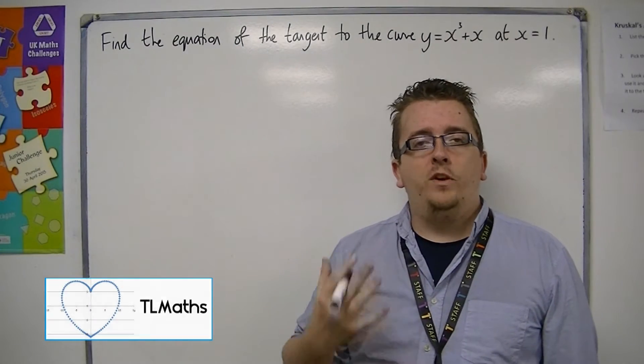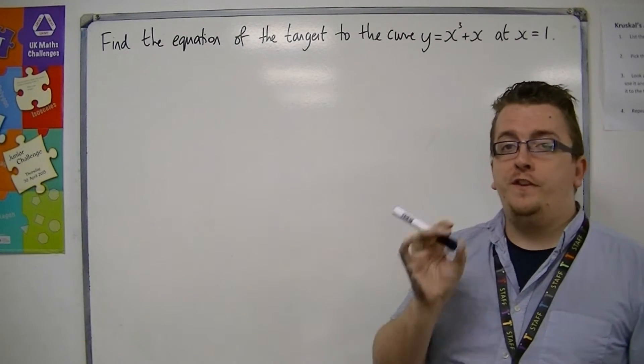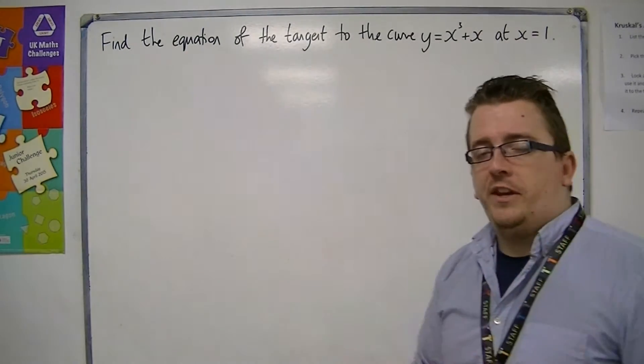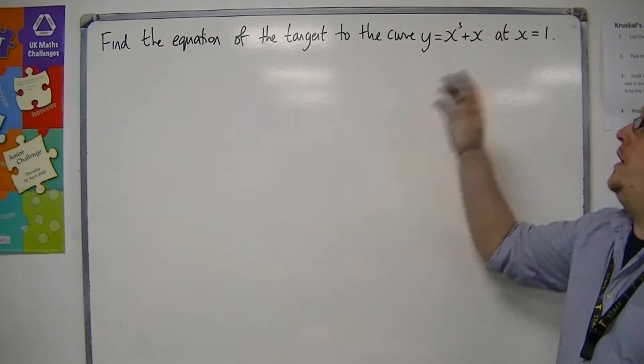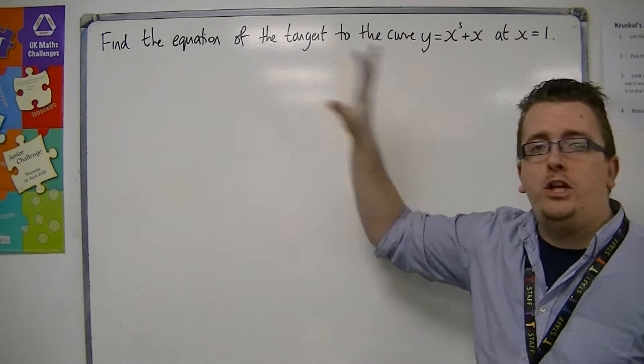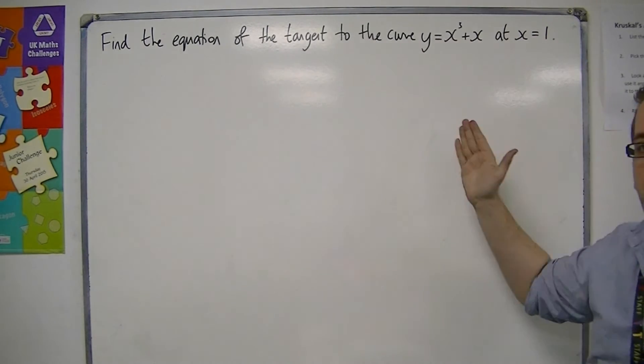In this problem, we're going to be looking at how we can find the equation of the tangent to the curve at a particular point. So we've got the equation y equals x cubed plus x, and we're going to try and find the equation of the tangent at x equals 1.